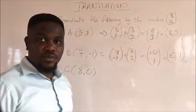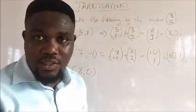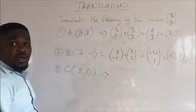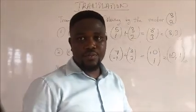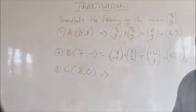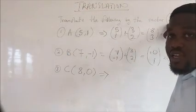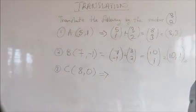I hope you get it. Translation is the easiest. The last one: let me give you some few seconds for you to try. You've been given the coordinate (8, 0) and you've been asked to translate it by the vector (3, 2).